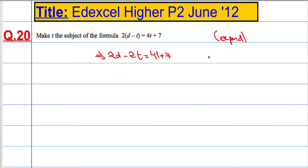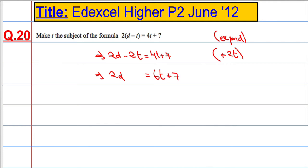Next, I'm going to collect all t's to one side by adding 2t to both sides. That gives us 2d equals 6t plus 7.